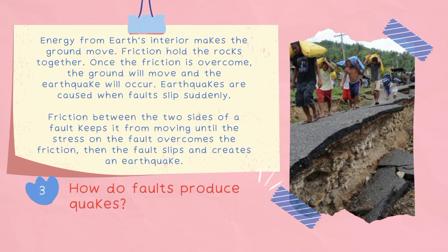How do faults produce quakes? Energy from the earth's interior makes the ground move. Friction holds the rocks together. Once the friction is overcome, the ground will move and the earthquake will occur. Earthquakes are caused when faults slip suddenly. Friction between the two sides of a fault keeps it from moving until the stress on the fault overcomes the friction, then the fault slips and creates an earthquake.